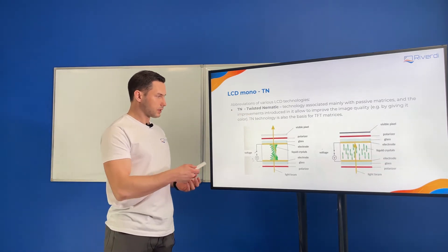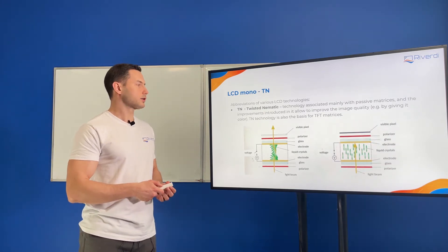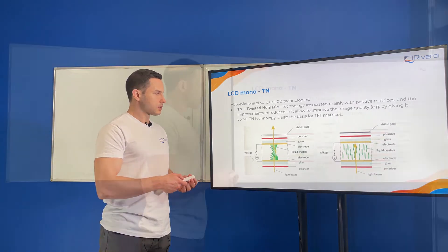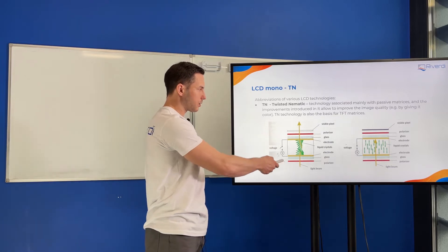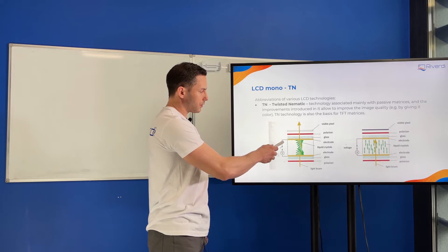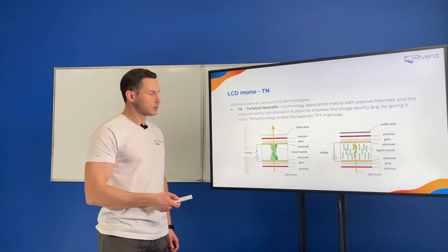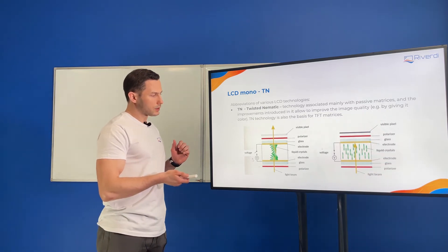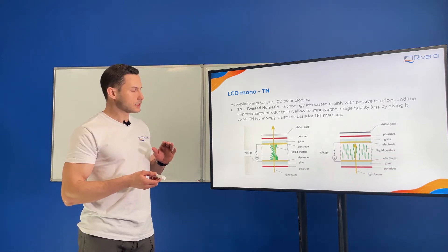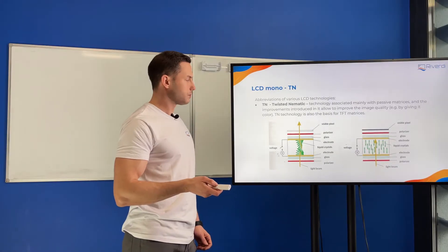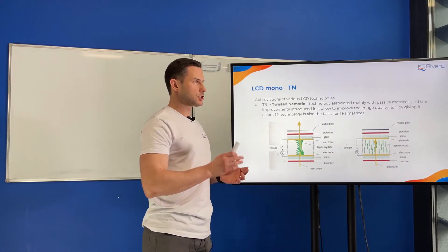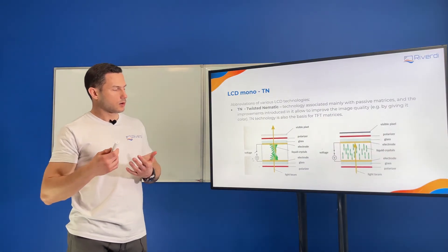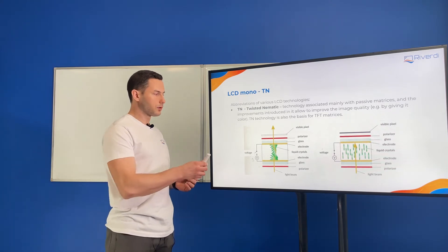Twisted Nematic is the first technology and we still use it nowadays. It's used even in TFT displays — it's the oldest but used until today, and its working principles are the simplest. First, we need two glasses where we put the liquid crystal inside. We need electrodes, which are transparent, made usually by ITO on the glass — a special transparent conductive surface that allows us to generate an electrical field between the two glasses.